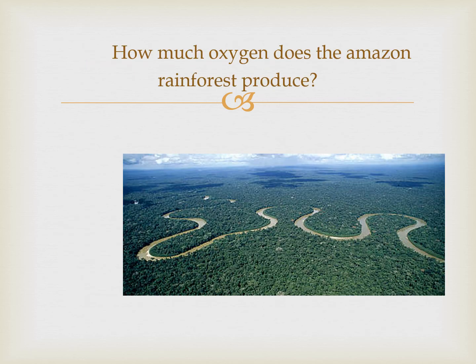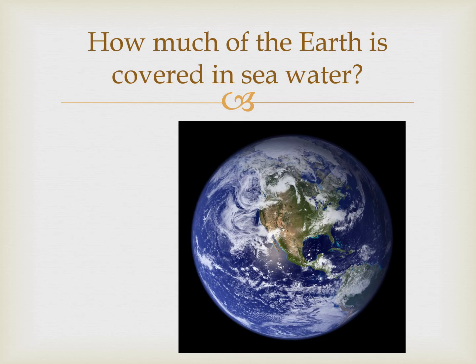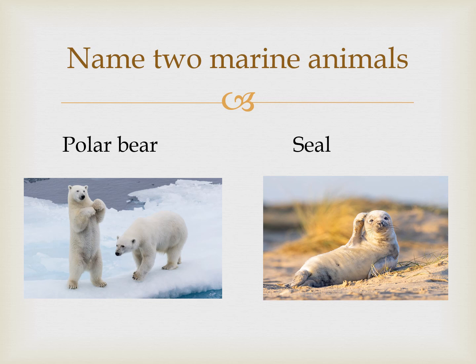How much oxygen does the Amazon rainforest produce? One third — that's 33.333%. How much of the earth is covered in seawater? Three fourths — that's about 80% of the earth. Look at the picture and see how much of it is water versus land — it's quite a crazy sight. The next question was straightforward: name two marine animals — polar bear and seal. You could get that straight out of the text.